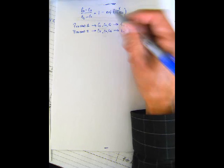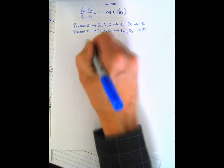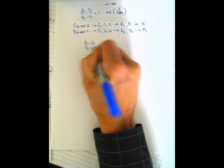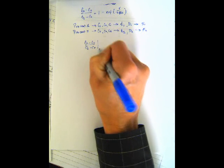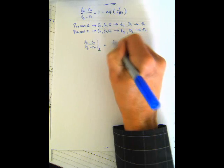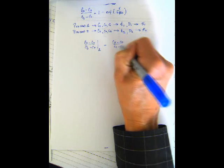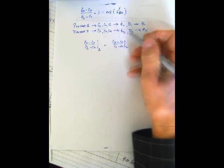Now if that's the case, then what you have is (Cx - C0)/(Cs - C0) for my process 1 is equal to that, obviously, because we didn't change any of the numbers, right, for process 2. But that means I can set the right hands equal.